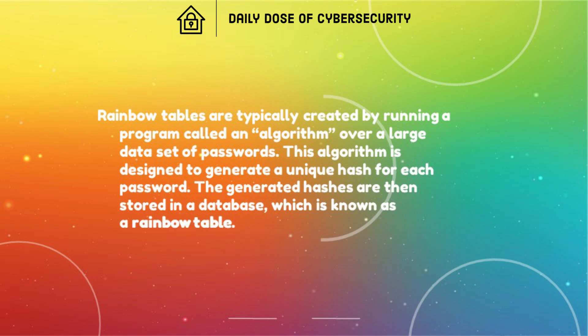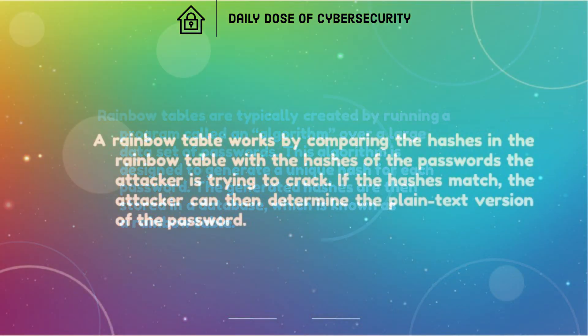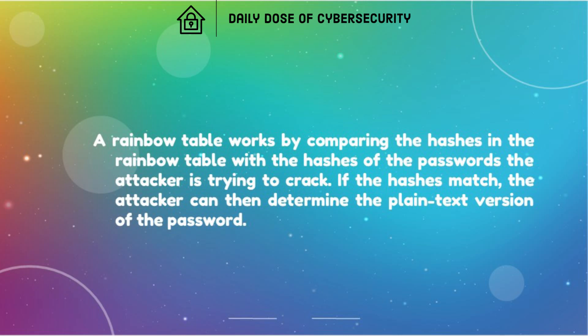Rainbow Tables are typically created by running a program called an algorithm over a large data set of passwords. This algorithm is designed to generate a unique hash for each password. The generated hashes are then stored in a database, which is known as a Rainbow Table. A Rainbow Table works by comparing its hashes with the hashes of the passwords the attacker is trying to crack. If the hashes match, the attacker can then determine the plain text version of the password.